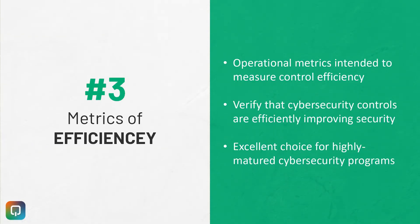The third and final type of cybersecurity program metric is metrics of efficiency. This is the most advanced form of metric, and it's often the most interesting to consider. Here, we're looking at either a metric of validation or effectiveness and contrasting it with the level of resource expended on the control.